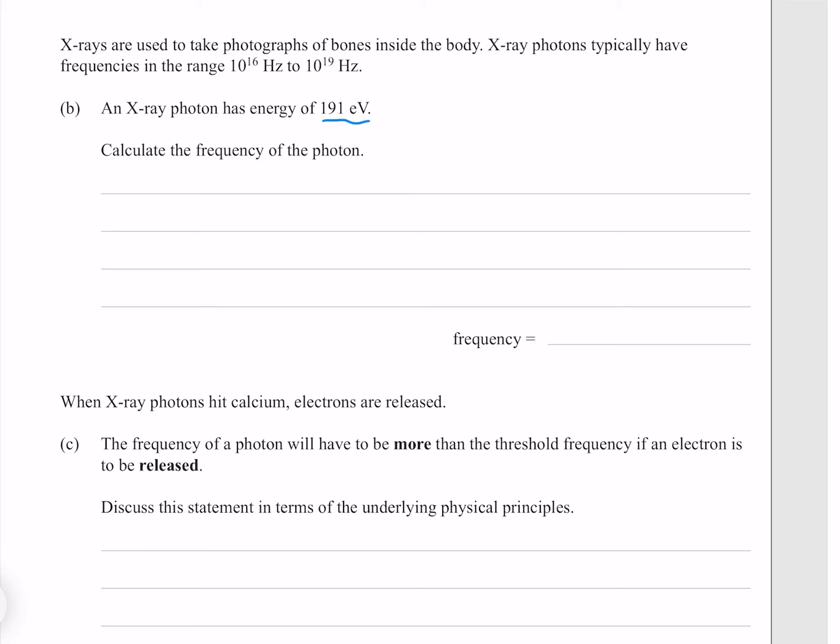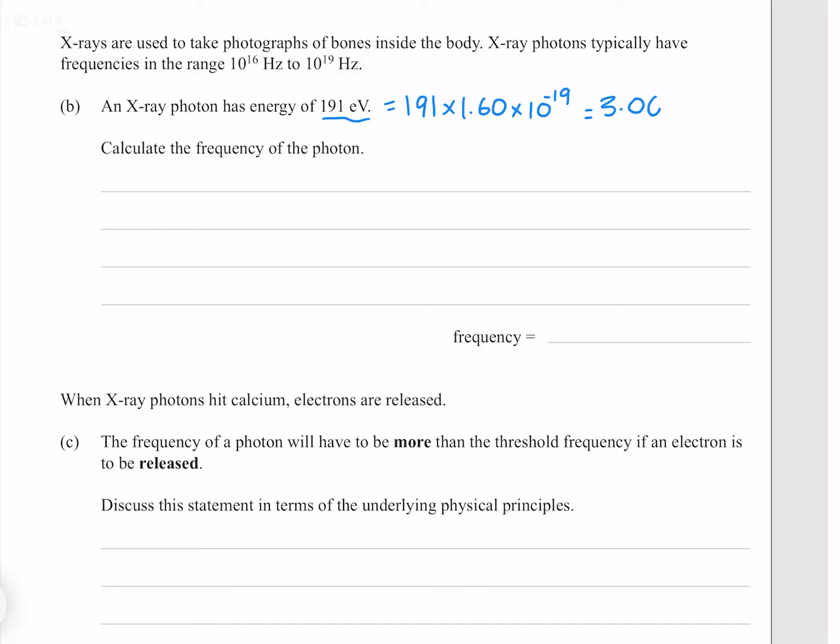An X-ray photon has energy of 191 electron volts. Calculate the frequency of the photon. First of all, we can convert this into joules by multiplying it by the charge of an electron. Which gives me 3.06 times 10 to the minus 17 joules to 3 significant figures.